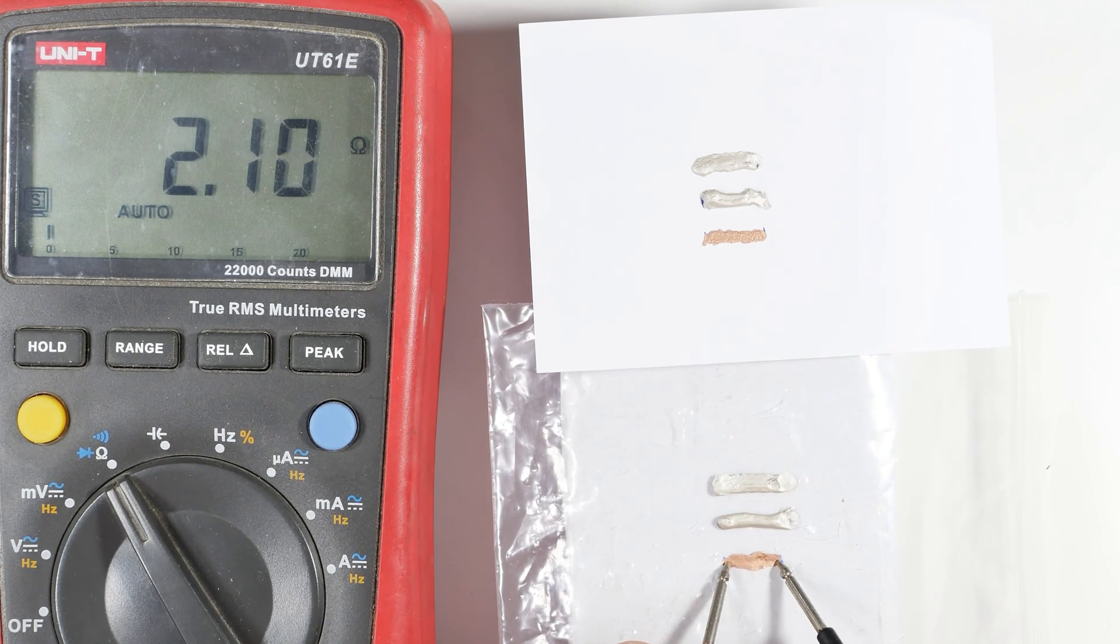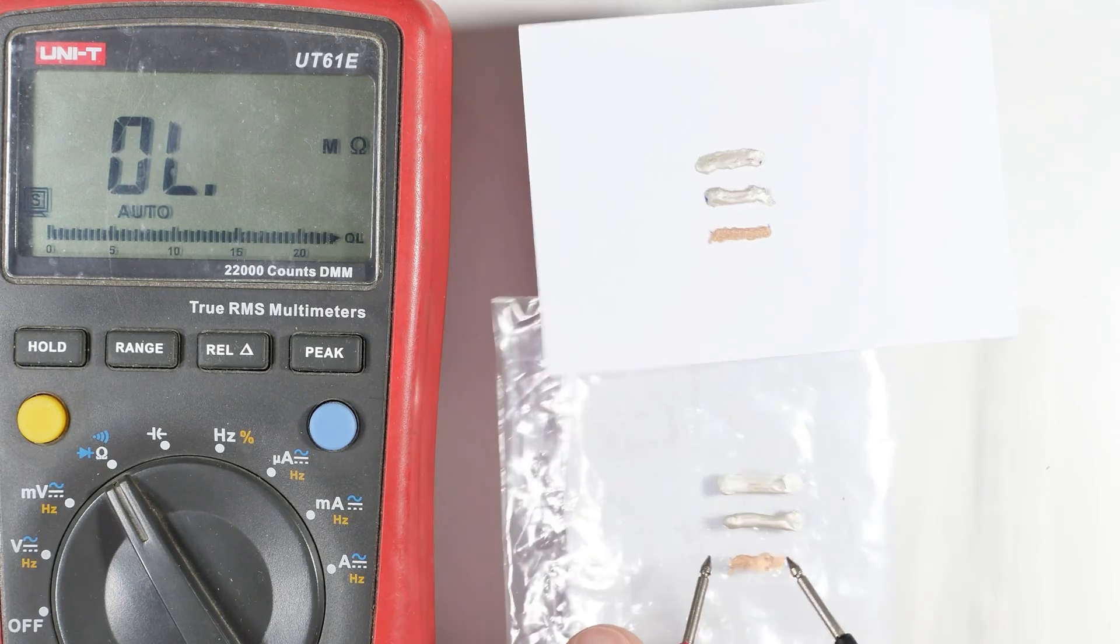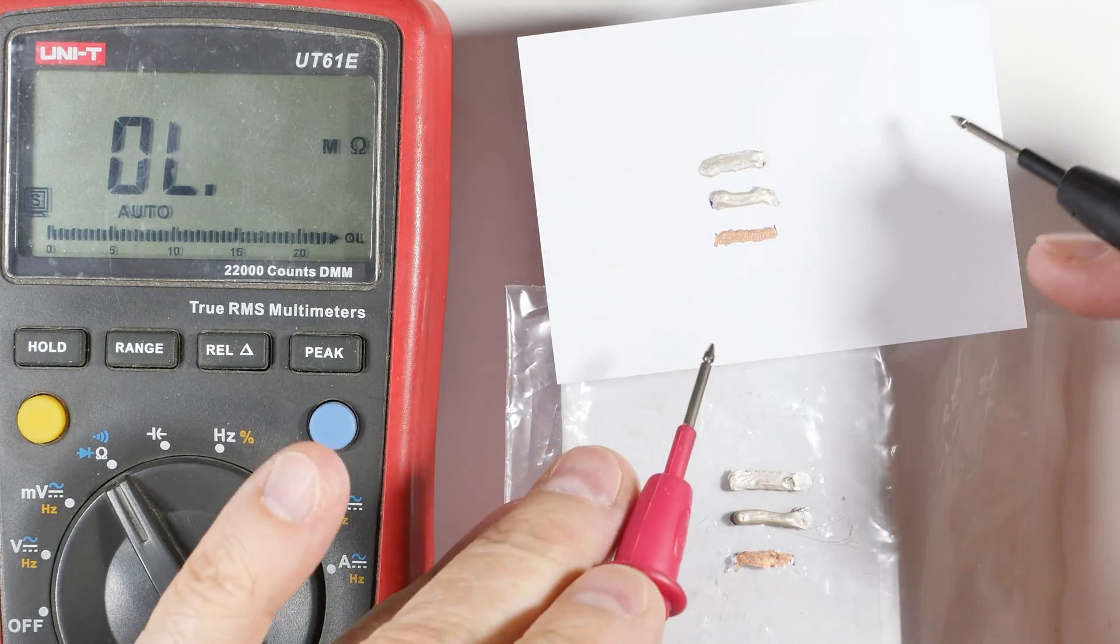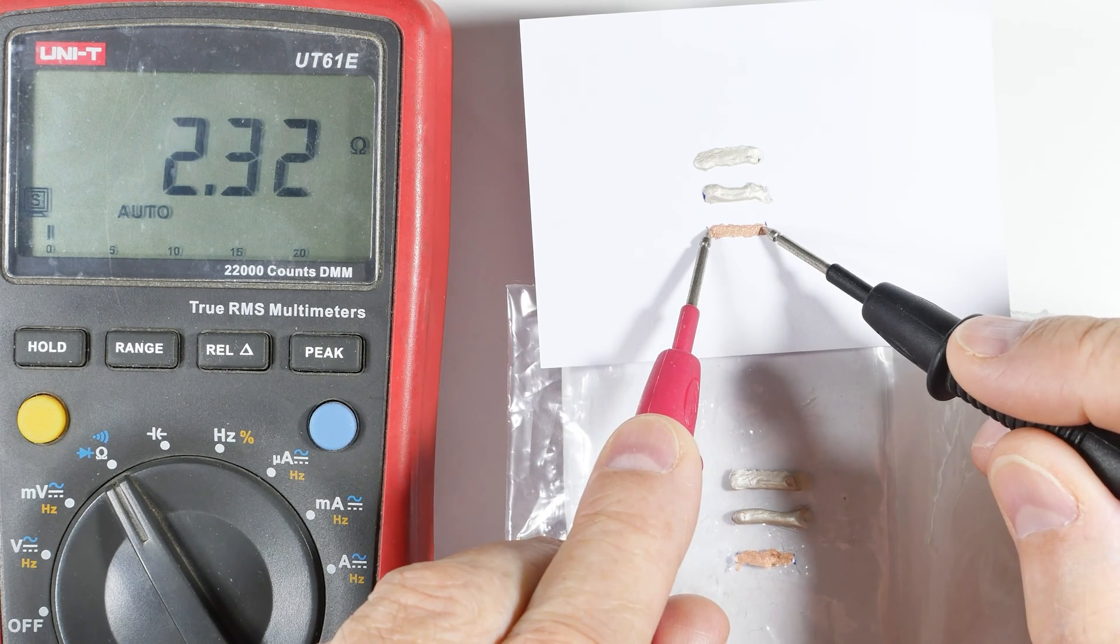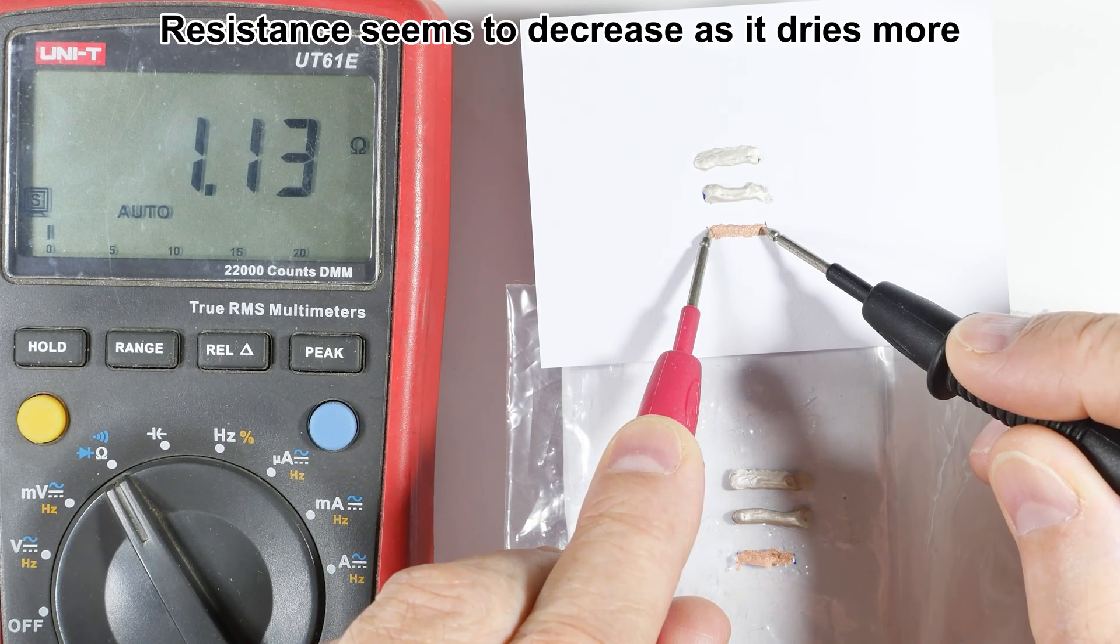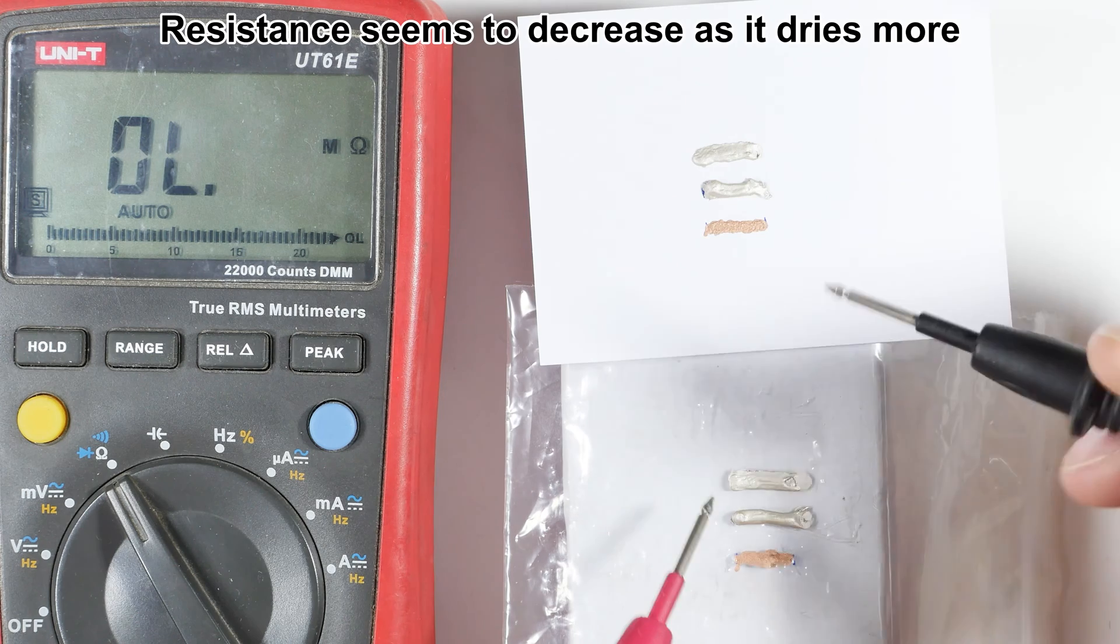So over one centimeter on the plastic we get about 2.1 ohms. That's not too terrible. This is the cheaper one of the two. And on the paper it's 1.13.